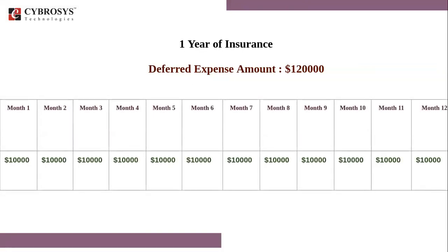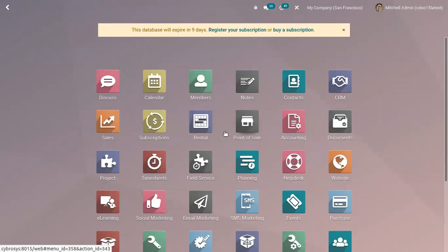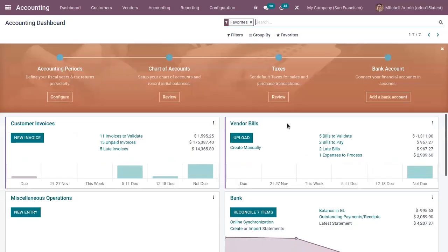We post this expense in the prepayment account and desire to recognize it only on a monthly basis, so each month for the next 12 months, 10,000 will be recognized as an expense. In Odoo accounting, these deferred expenses are handled by spreading them in multiple entries that are automatically created in a draft state and then posted periodically.